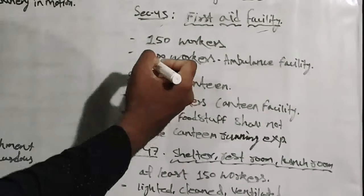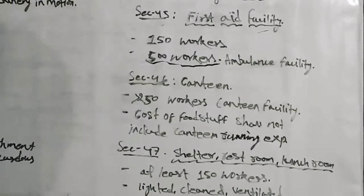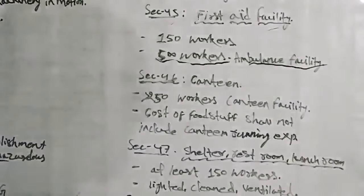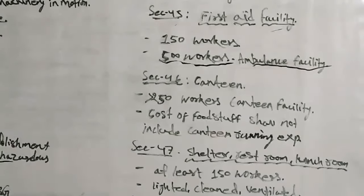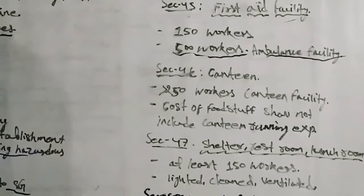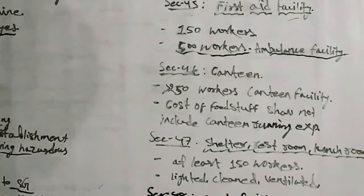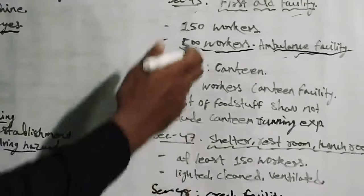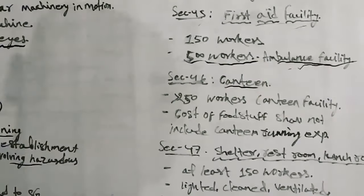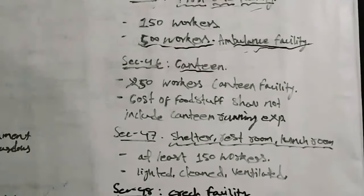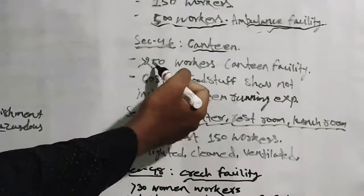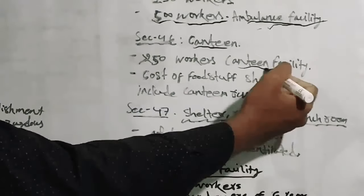Further, where 500 or more workers are working in the factory, a canteen facility should be provided. Where 250 workers are working, canteen facility is mandatory.